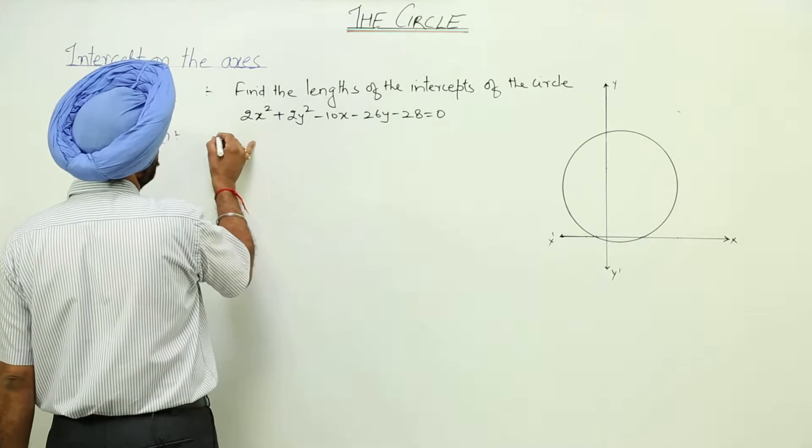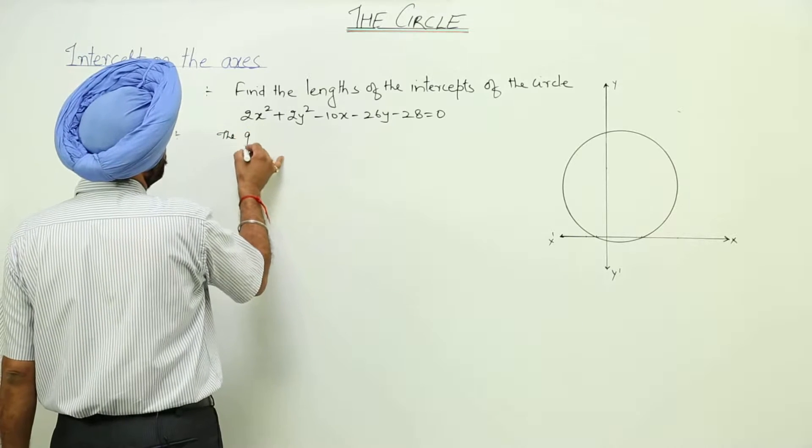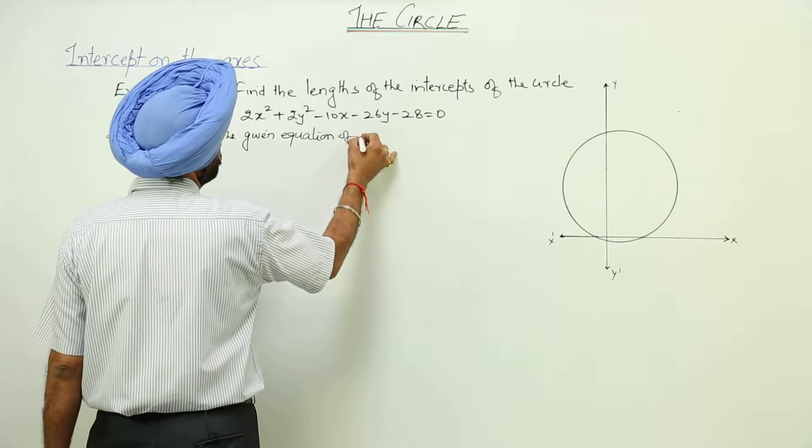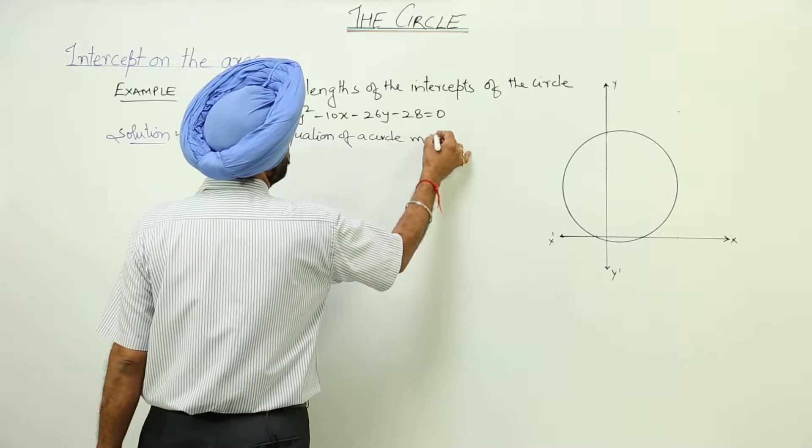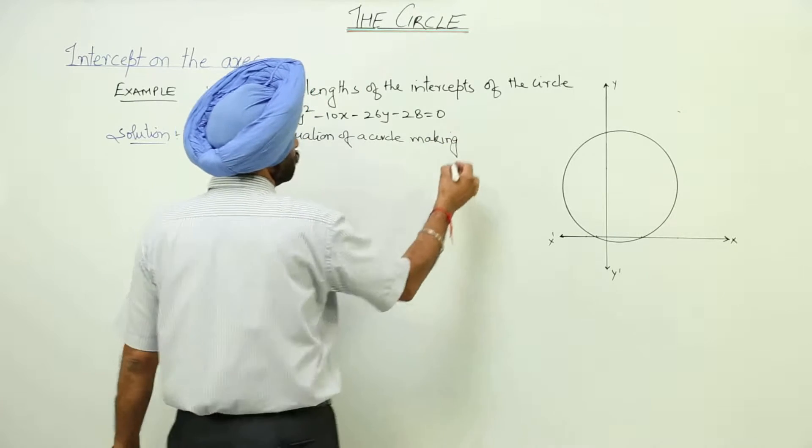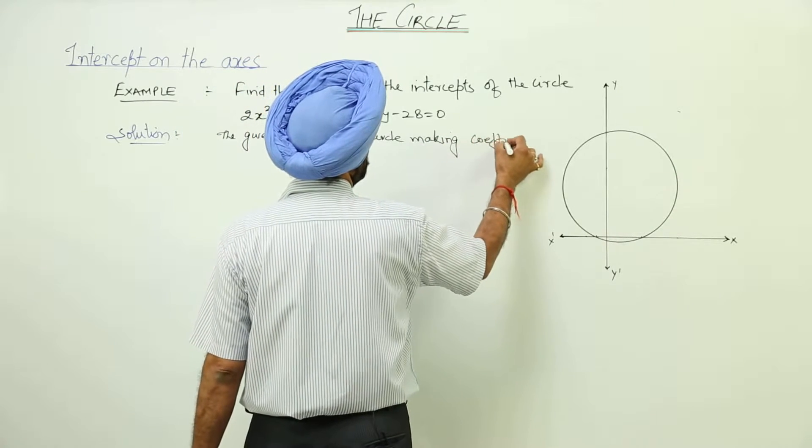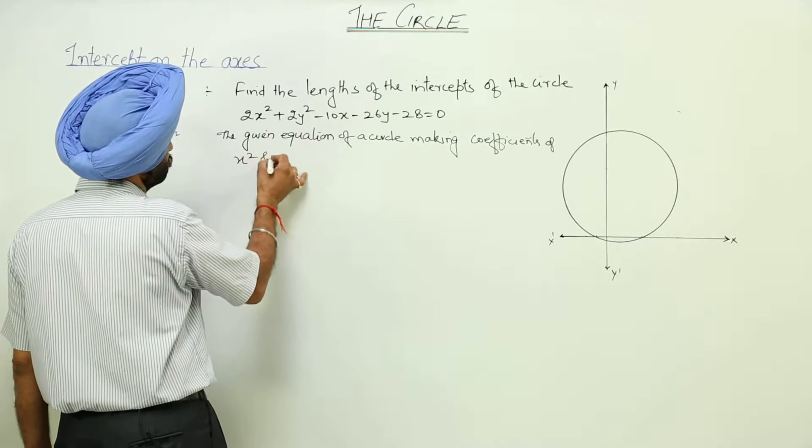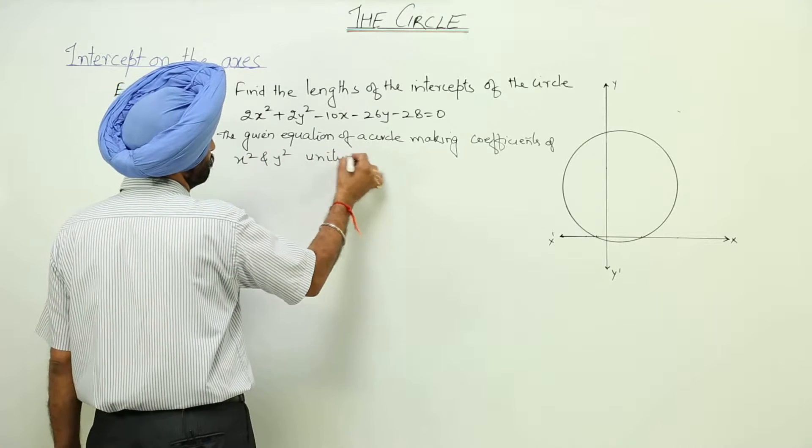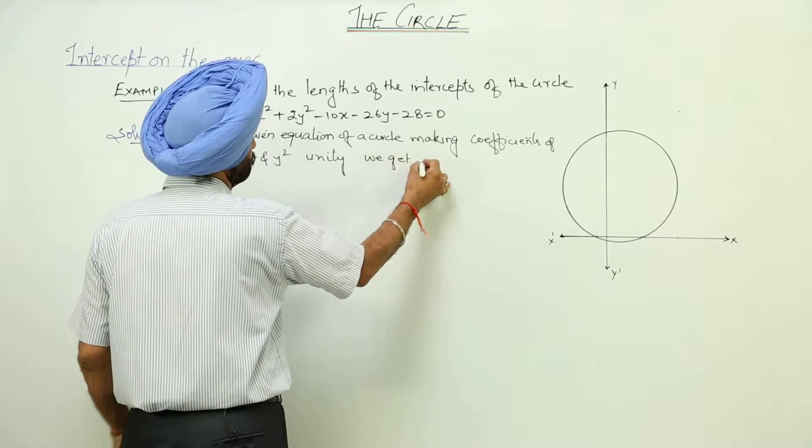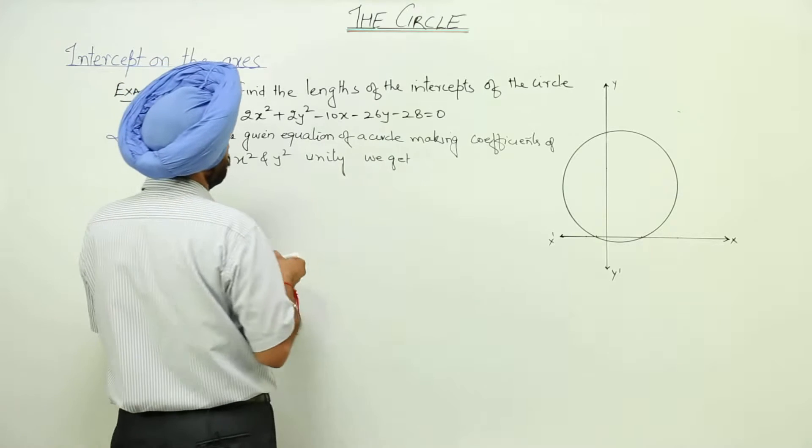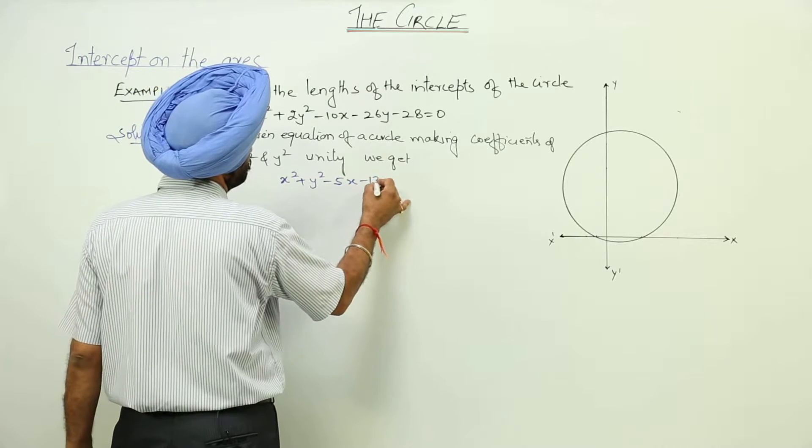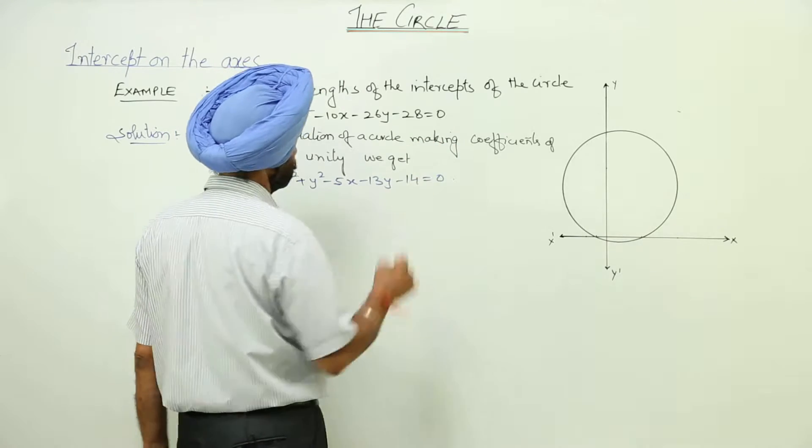First step is the given equation of a circle making coefficients of x square and y square unity. We get x square plus y square minus 5x plus y minus 13y minus 14 is equal to 0.